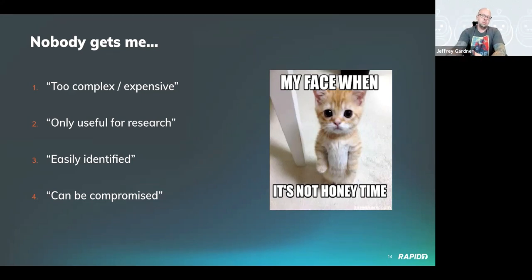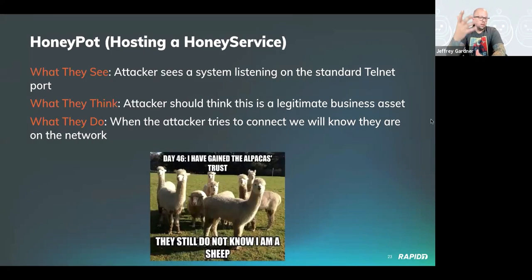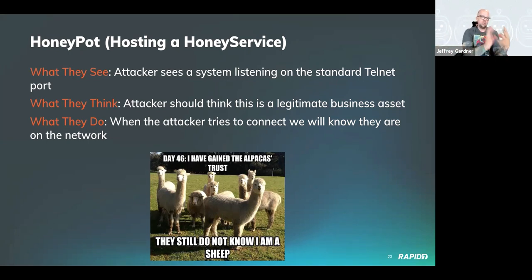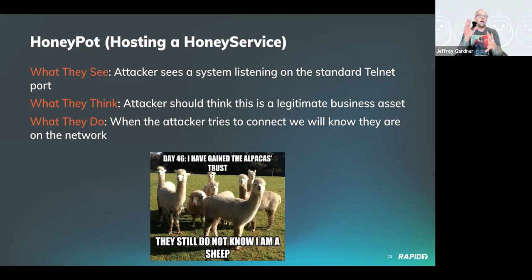Now let's go over some examples. A honeypot hosting a honey service — what an attacker would see is a system listening on something like a standard Telnet port or RDP 3389. The attacker should think this is a legitimate business asset. There are two schools of thought: one says it should blend in and look as realistic as possible; the other — which I belong to — says make this thing look like a flamingo in a herd of cows. Make someone look at it and think 'what is this thing, I need to interact with it.' Either way works, because when the attacker tries to connect, we'll know they're on the network.